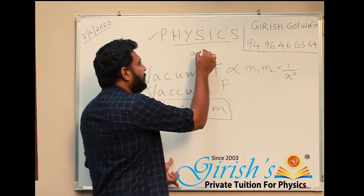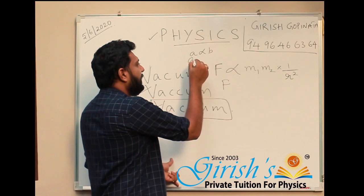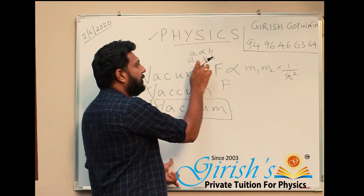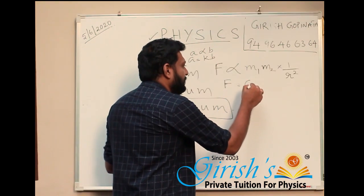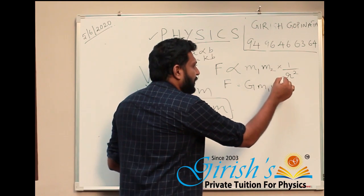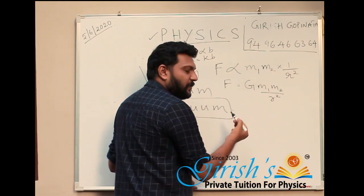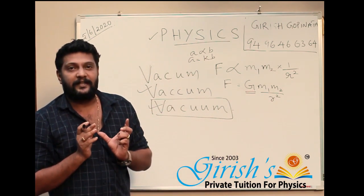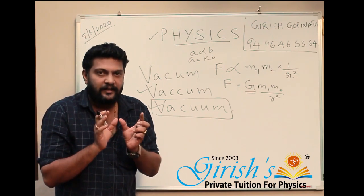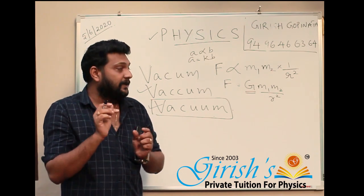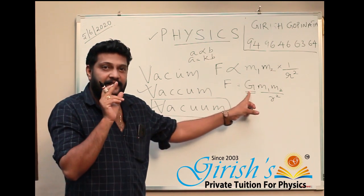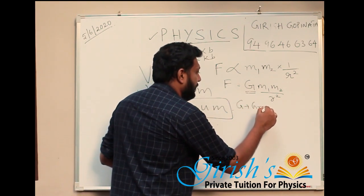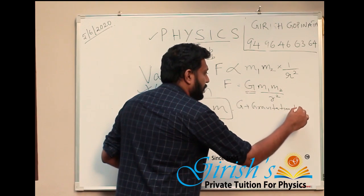Once we introduce a constant, that is the gravitational constant. Small g is acceleration due to gravity, and capital G is the gravitational constant.